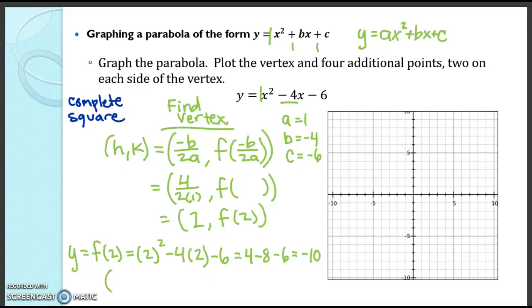Which means our vertex (h, k) is going to be at (2, negative 10). So we go to 2 and then we go to negative 10.